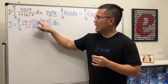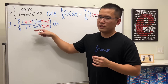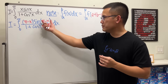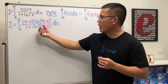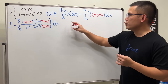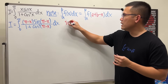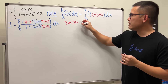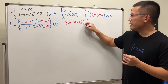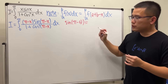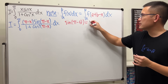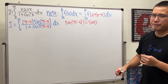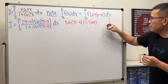Thankfully we have trig functions with input π − x, so we can simplify. Let me remind you: sin(π − θ) is actually equal to sin(θ). Here's why — look at the unit circle: sine is the y-value.